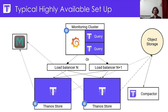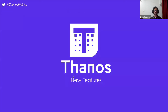Compaction and downsampling improves query performance across the Thanos fleet. To reduce requests to object storage, you can run a Memcached server to cache those chunks and blocks. Memcached not only improves performance but also reduces the number of requests to object storage, which in turn can reduce the cost of the whole setup. That's what a typical Thanos high-availability setup looks like.